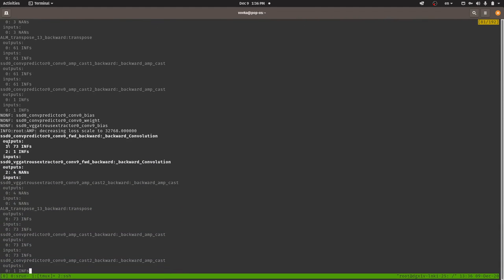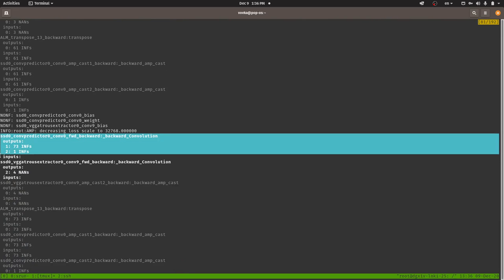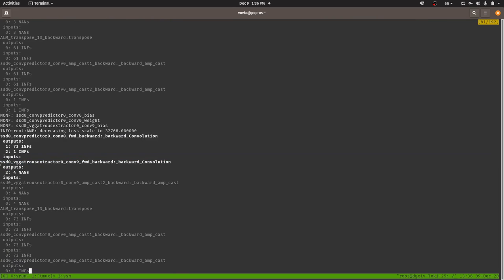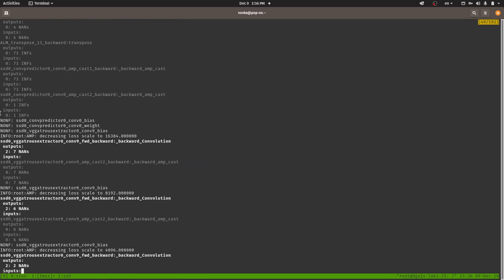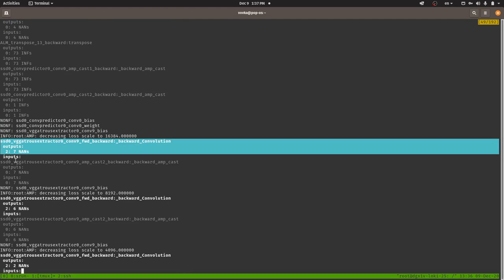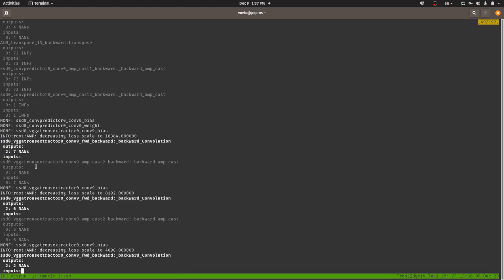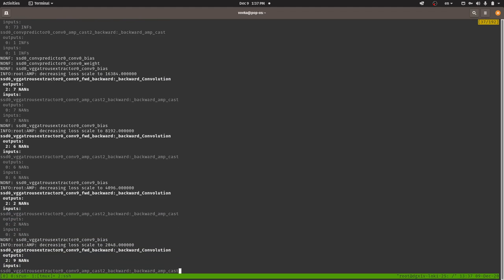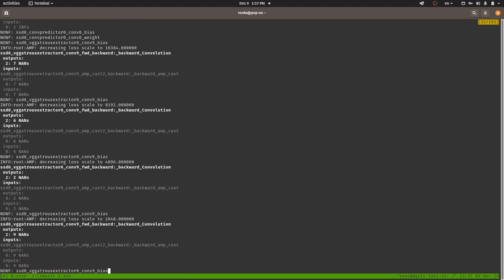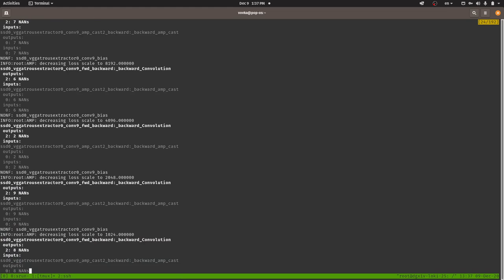Now let's see how these values change as we decrease the loss scale. Looks like inf values in the output of the first op in question go away as expected. This is what should happen as we scale down the loss. But NaN values in outputs of the second op with extractor in its name are still there, no matter how small we are making loss scale.